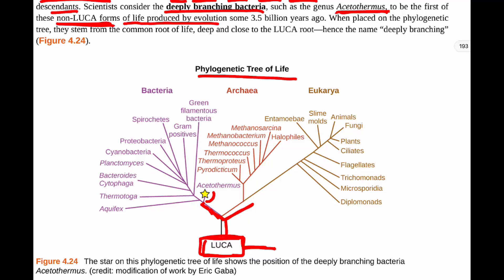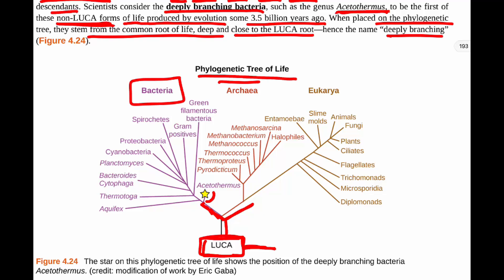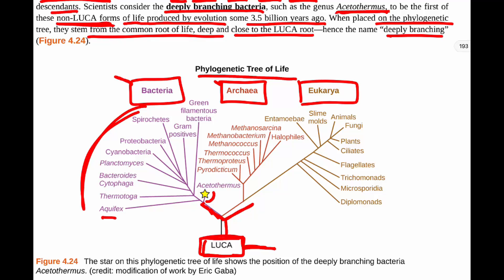They believe it was produced by evolution some three and a half billion years ago. When placed on the phylogenetic tree, they stem from the common root of life, deep and close to the Luca root — hence the name deeply branching. Remember, these are our domains: bacteria, archaea, eukarya. We've been talking a lot about bacteria in this whole chapter. We'll briefly get to archaea in a moment, and we're going to talk about Aquifex and Acetothermis right now.